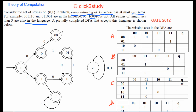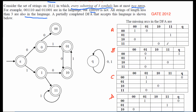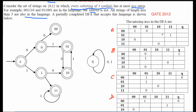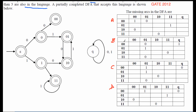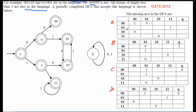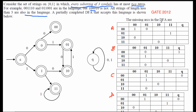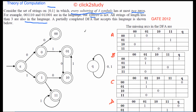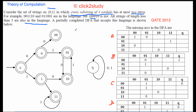In a DFA, for every state you must have a transition for every symbol in the alphabet. Some transitions are missing here, so the DFA is incomplete. Rather than drawing the arcs directly, you have to choose the correct option from four choices — A, B, C, and D — which represent the missing transitions.